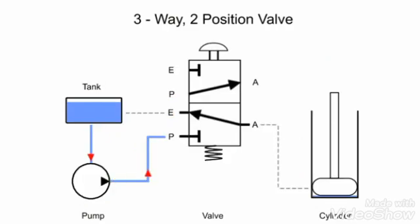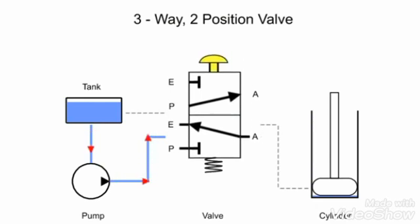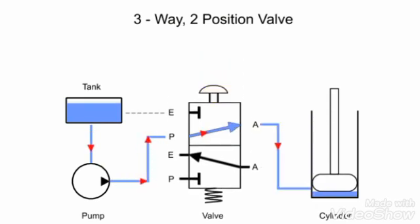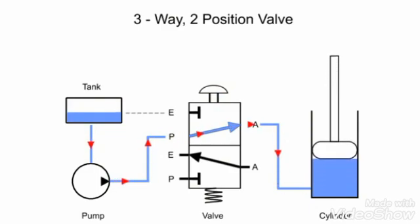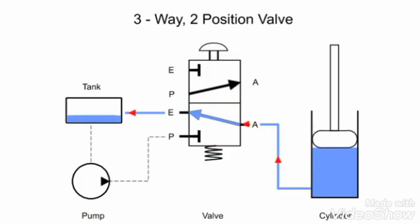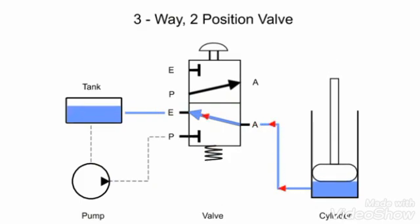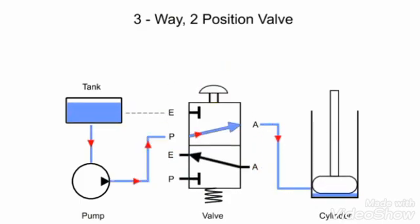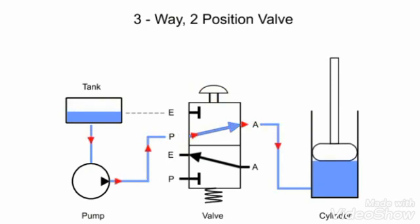Here's a graphical rendering of the same system using symbols as they would appear on a schematic diagram. Two- and three-way control valves are ideal for use as directional control valves to operate cylinders or hydraulic rams, filling and draining tanks, as mechanical brakes, and even in vacuum systems.